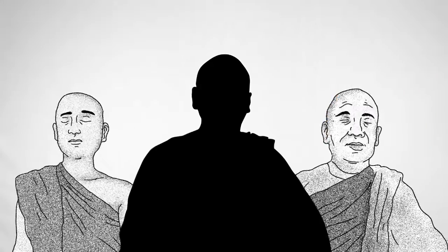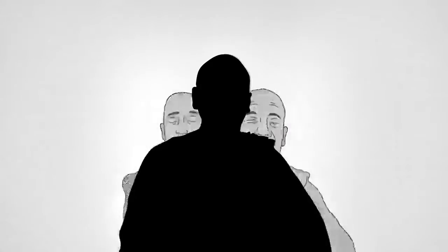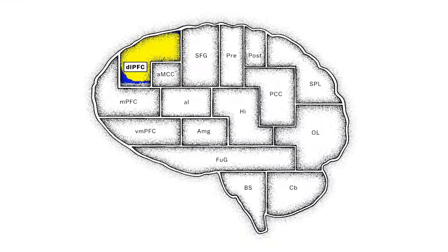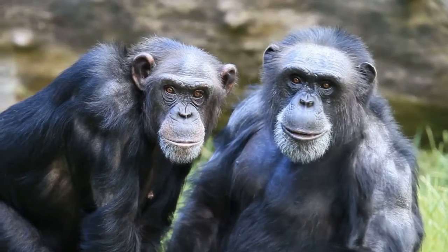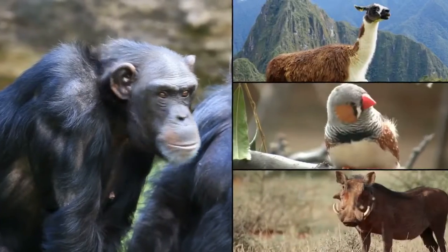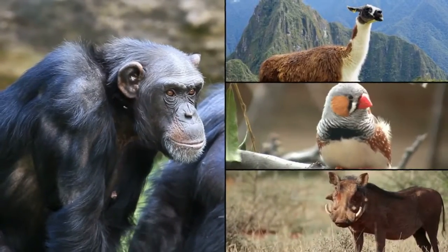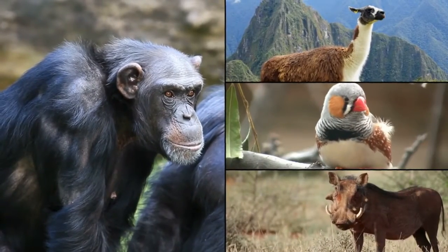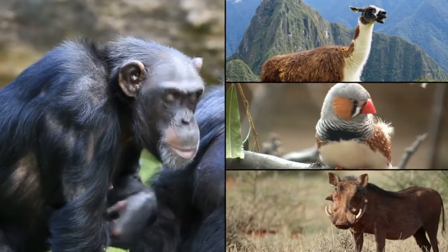In that moment, when you direct your attention back to your breath, a part of the brain lights up — the dorsolateral prefrontal cortex. It's one of those brain regions that sets us primates apart from other animals, part of the control center that helps us focus.